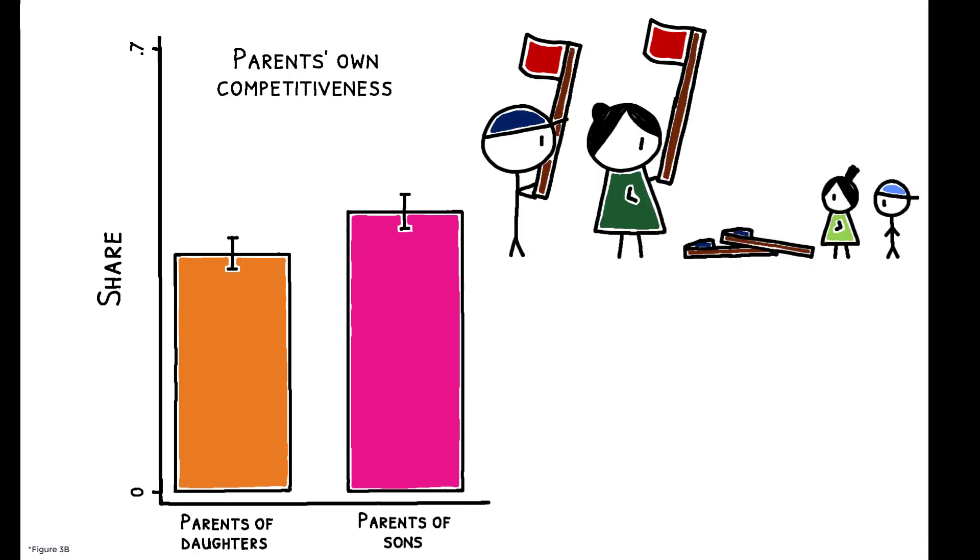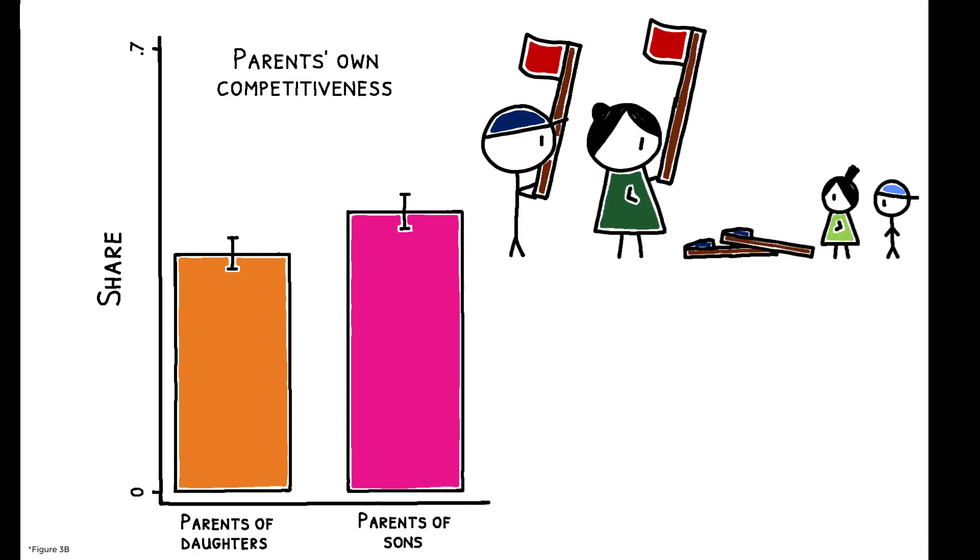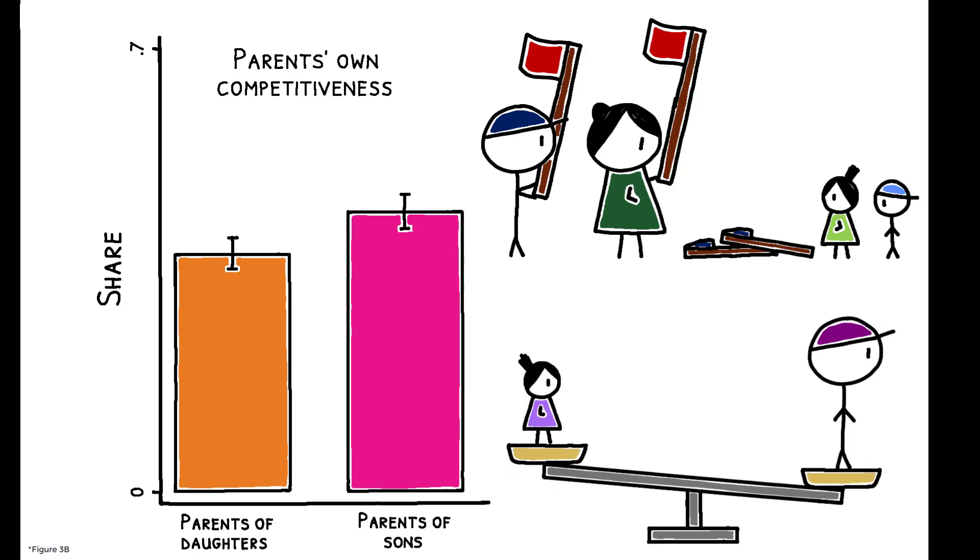Parents of sons are only marginally more competitive than parents of daughters, both on average are more competitive than their children, and parents appear to weight their own preferences more heavily when making choices for daughters. These effects work in the direction of parents pushing daughters to compete more than they otherwise might, and contribute to reducing the gender gap in parents' choices.